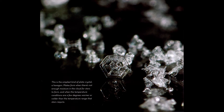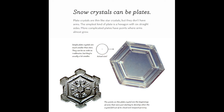This is the simplest kind of plate crystal — a hexagon. Plates form when there's not enough moisture in the cloud for stars to form, and when the temperature conditions are a few degrees warmer or colder than the range that stars require. Snow crystals can be plates. Plate crystals are thin like star crystals, but they don't have arms. The simplest kind of plate is a hexagon with six straight sides. More complicated plates have points where arms almost grew. Simple plate crystals can be as wide as one millimeter, but are usually a lot smaller.